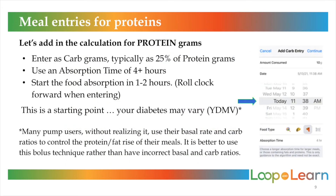Let's try adding in the following calculation for protein grams into Loop. Entering the protein as carb grams: try entering 25% of the protein grams of your meal as carb grams with a 4 to 5 hour absorption, and enter them beginning 1 to 2 hours from when you actually eat. To do this, look at the arrow in the diagram, click on the time, and scroll it forward. As a warning, many people think they have correct carb ratios and basals in their pumps, but they're actually setting them artificially high and covering protein and fat blood sugar rises with these incorrect settings. You might need to re-examine your carb ratios and basals during this time. This suggested 25% of protein grams is a starting point that has worked for many, but your diabetes may vary, so proceed with extreme caution whenever you alter your insulin dosage.